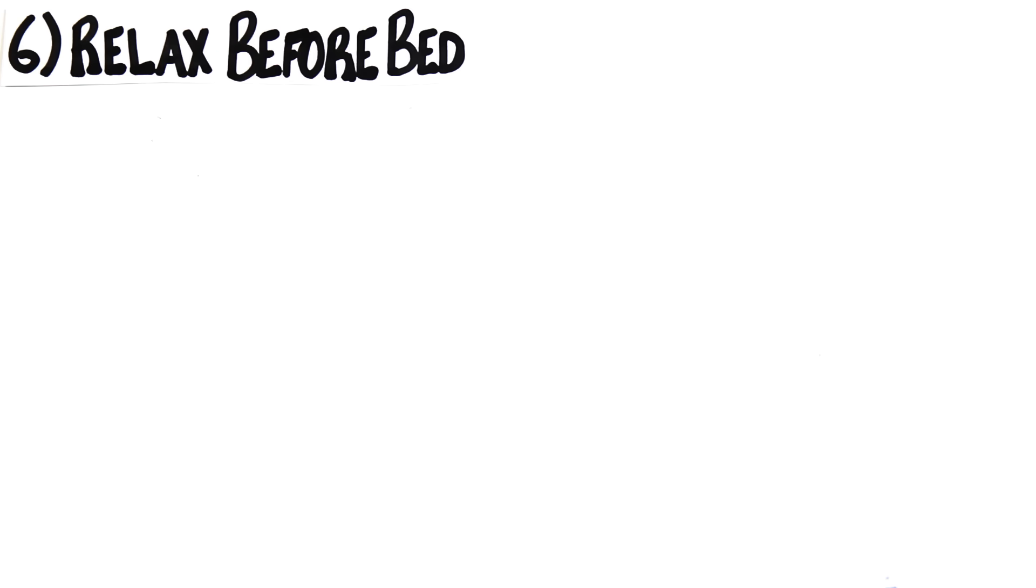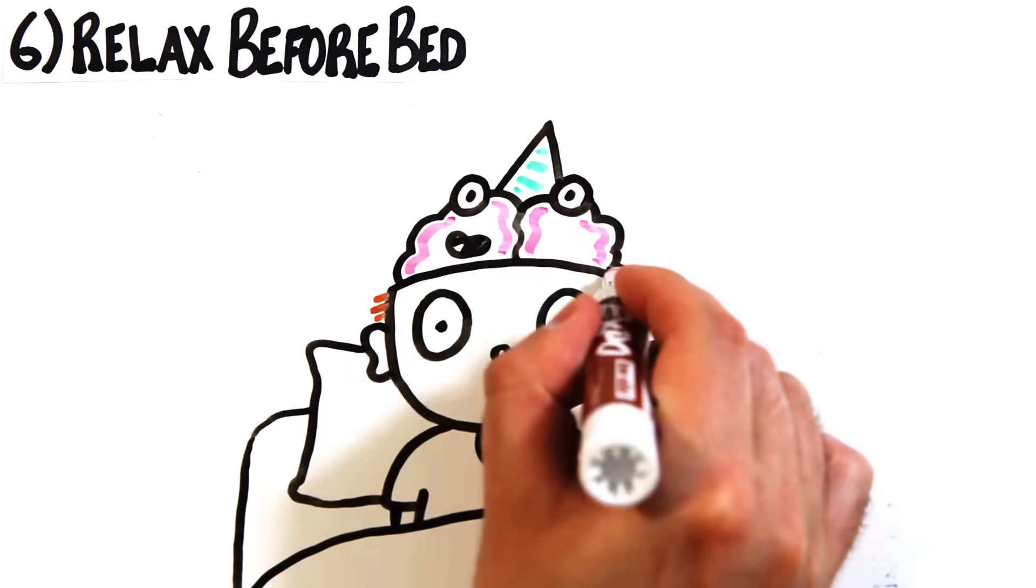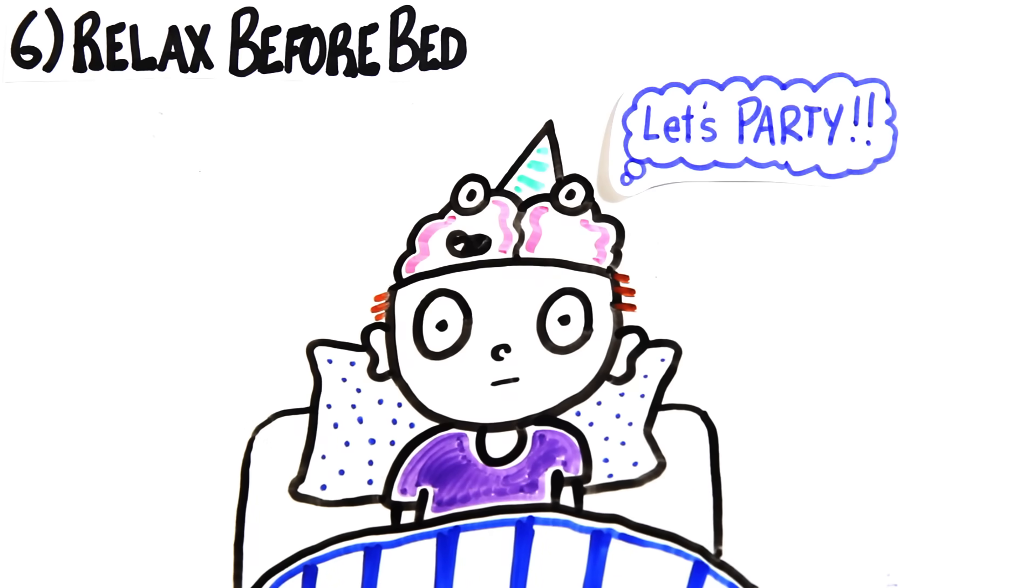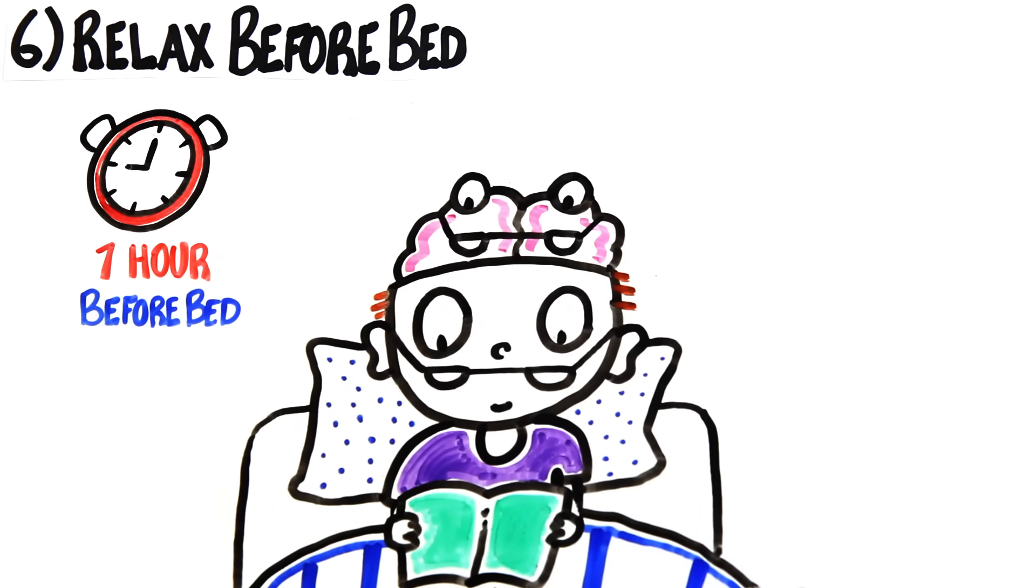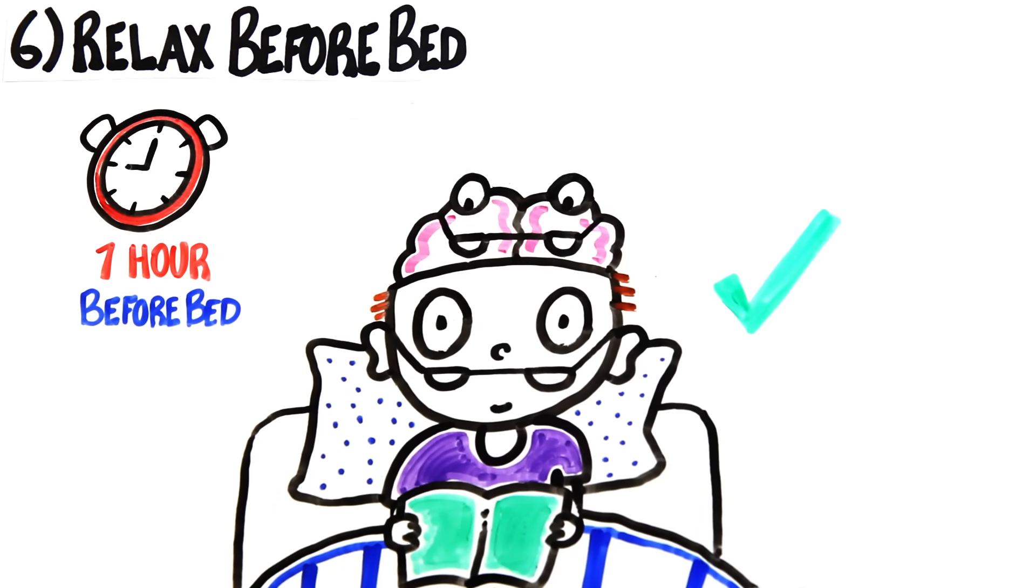Number six is to make sure you're actually relaxing before bed. If you try to sleep and you're wired or on, your brain just won't be ready. A relaxing activity within the hour before bed, like reading, is the perfect ritual to put you in the right mindset.